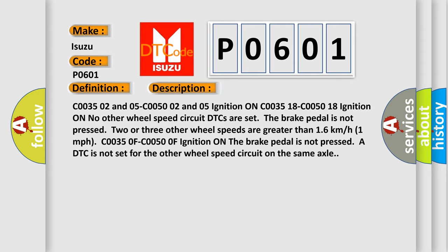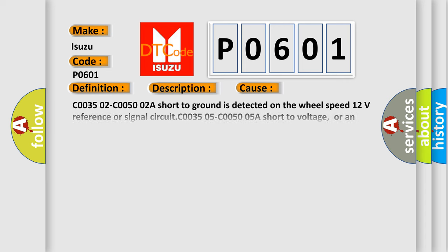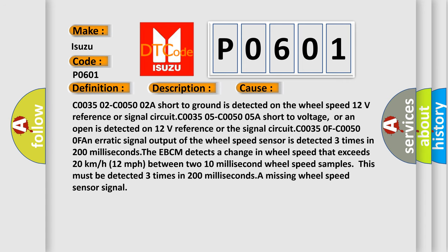This diagnostic error occurs most often in these cases: C0035 02, C0050 02A short to ground is detected on the wheel speed 12V reference or signal circuit. C0035 05, C0050 05: A short to voltage or an open is detected on 12V reference or the signal circuit.